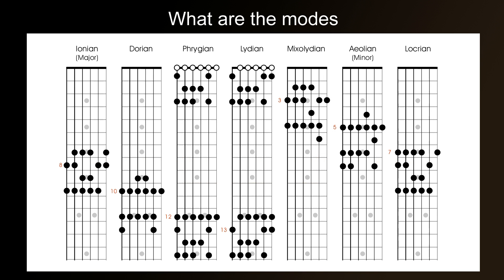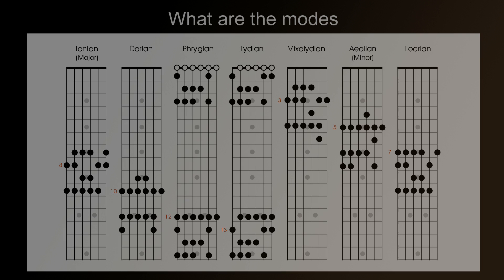Don't worry if you don't remember or didn't get any of the scales in the first part of this tutorial — that's not the idea. The idea was purely to help you understand the theory behind the modal scales. The only way to learn the modal scales effectively is to learn them one at a time, and that's what we'll be doing over the next few weeks. Starting with the Ionian scale. Mode 1. The Ionian scale.